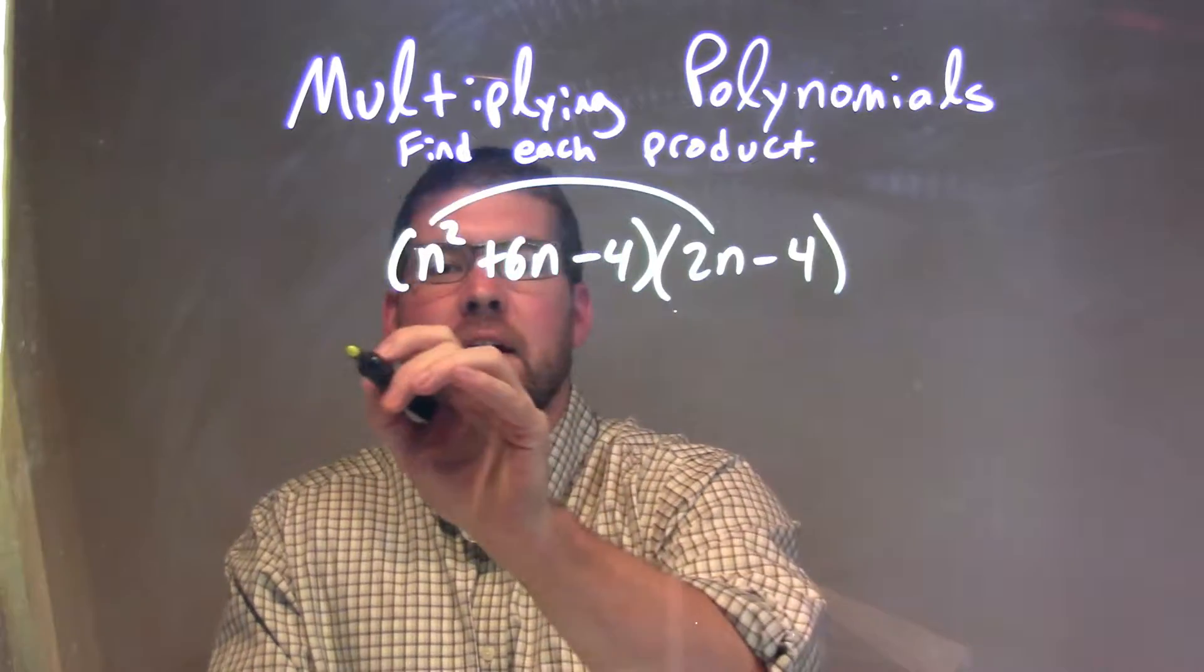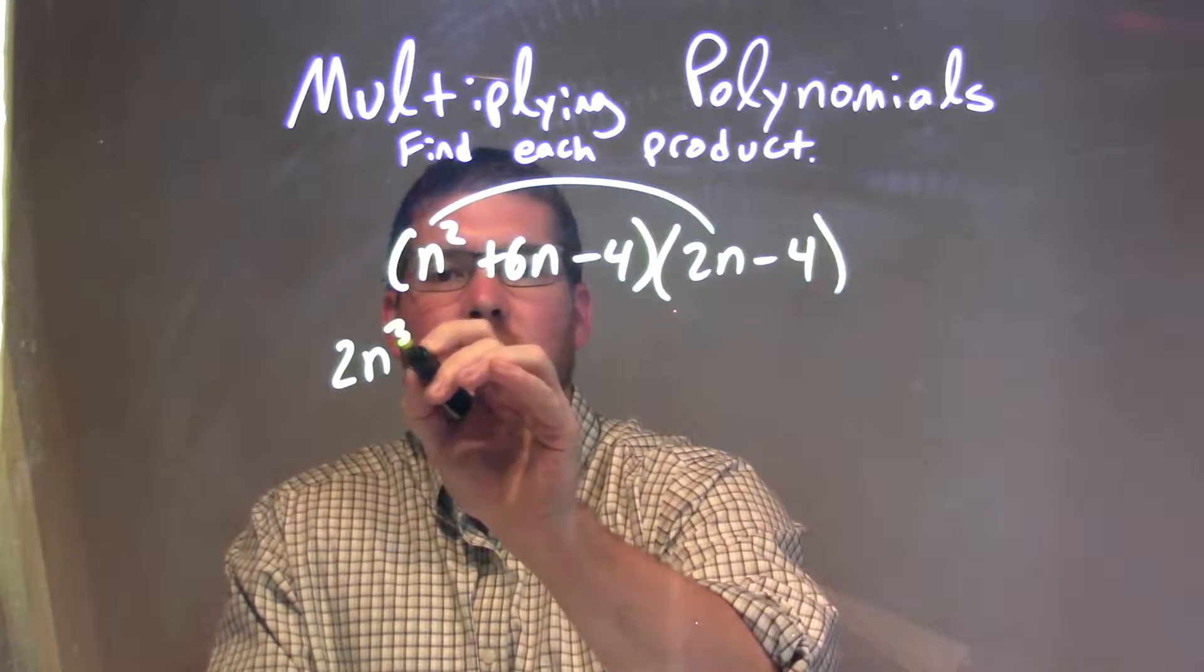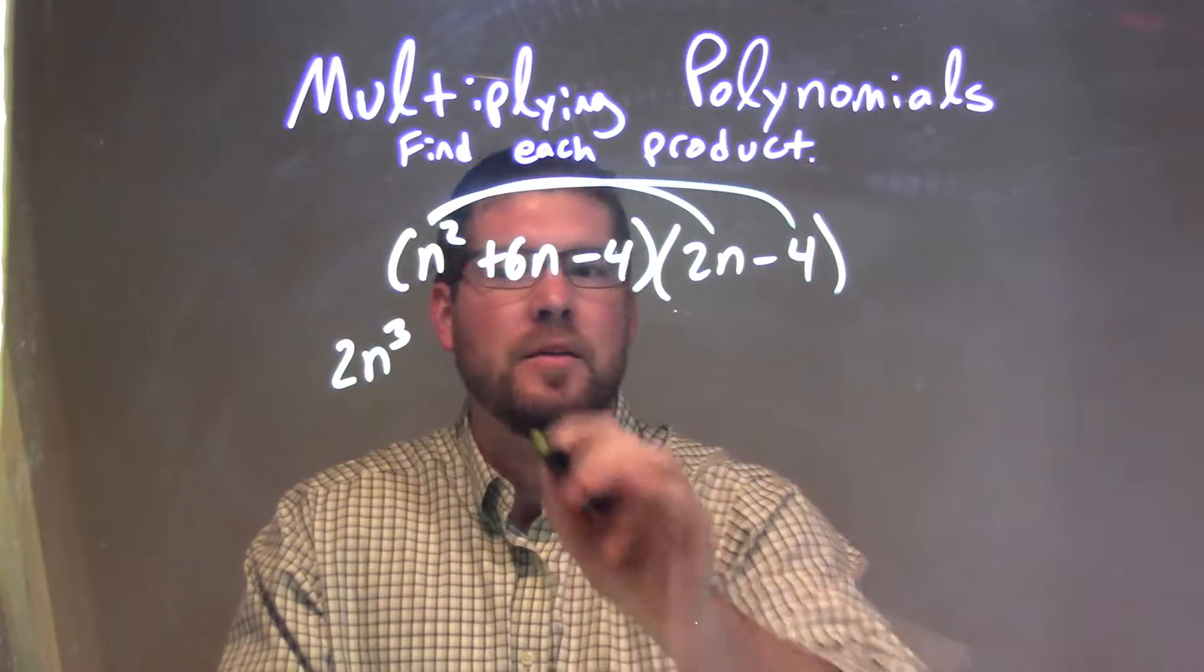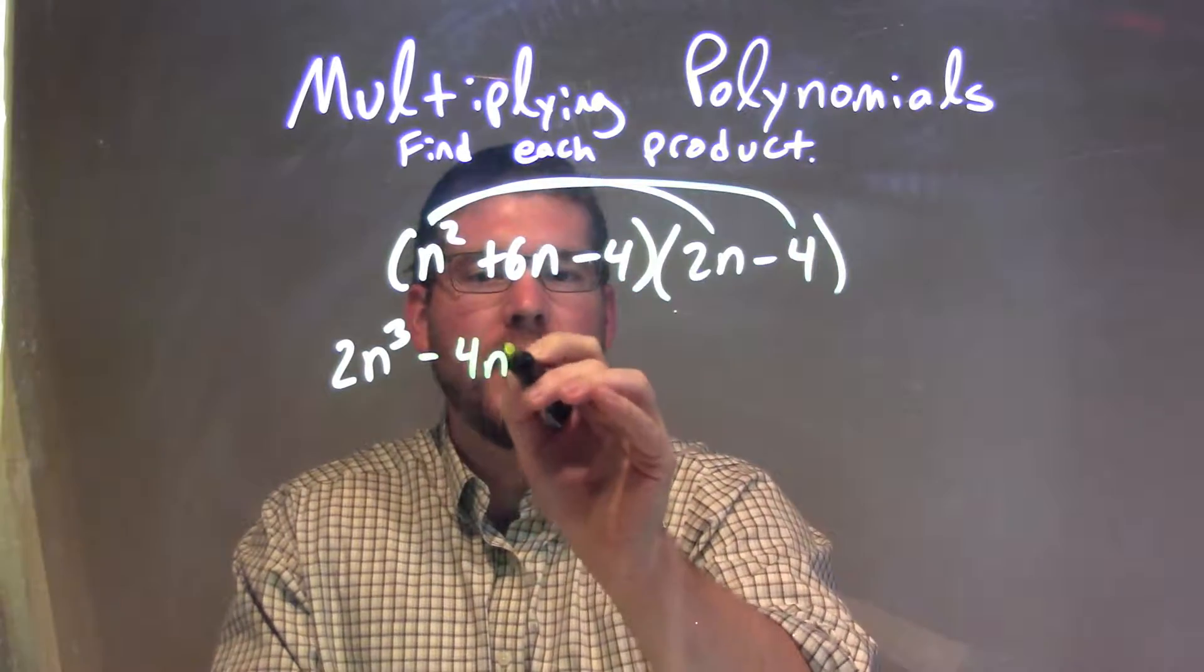n squared times 2n is 2n to the third power. n squared times minus 4 is minus 4n squared.